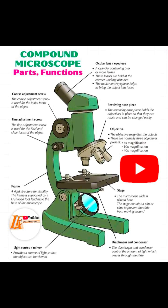We also have another one called the fine adjustment knob, which fine tunes the focus for a clear image. We have another one which we call the arm, which supports the upper part and is used to carry the microscope.